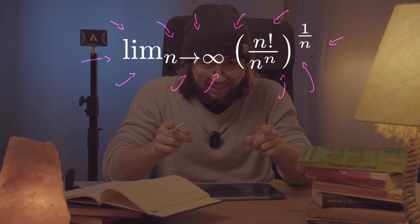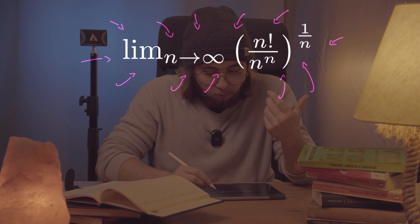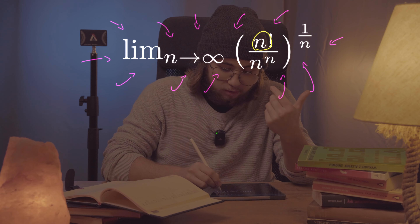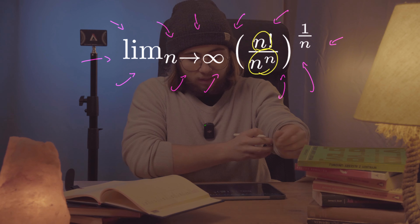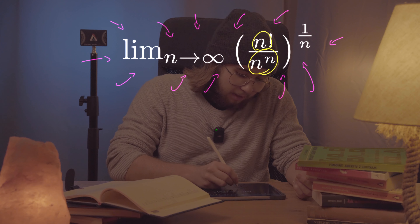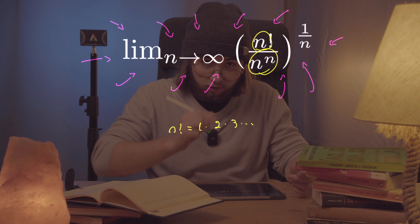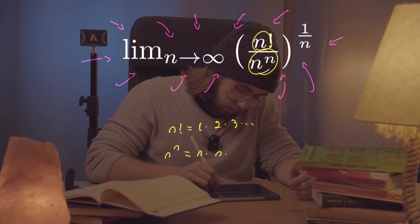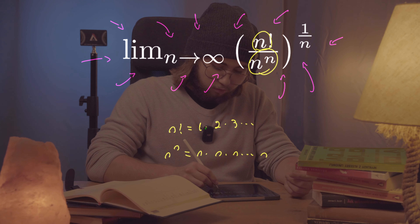How are we supposed to evaluate it? First of all, n factorial will definitely be smaller than n to the power of n in the denominator. That's because in n factorial we multiply consecutive integers together, but in n to the power of n we just multiply n by itself n times.